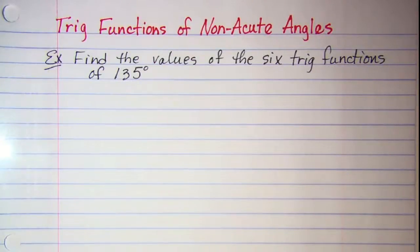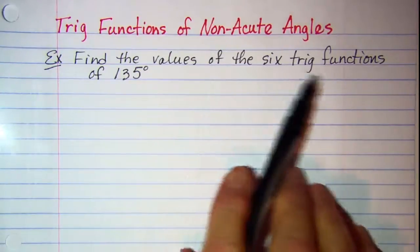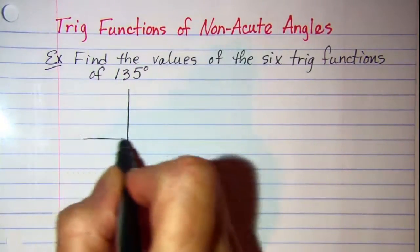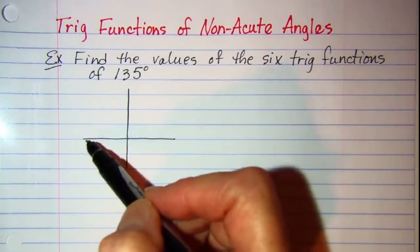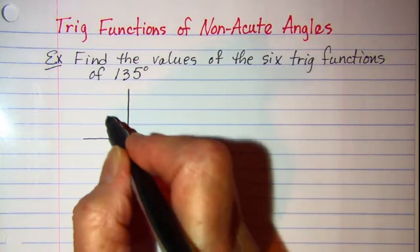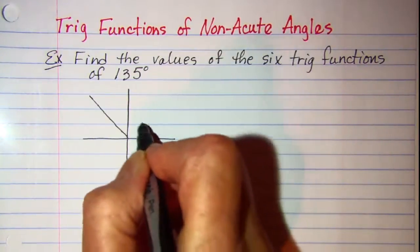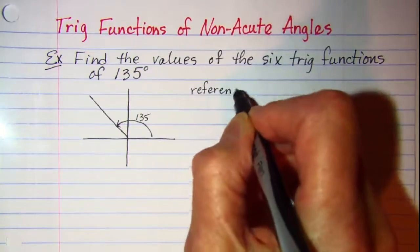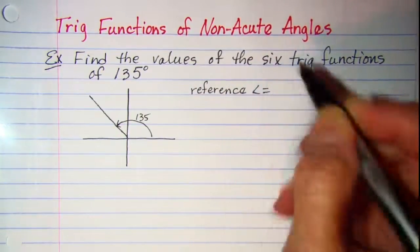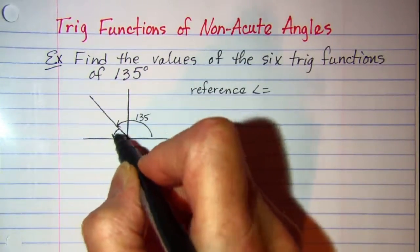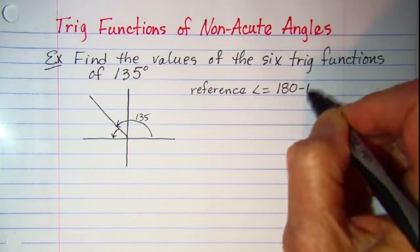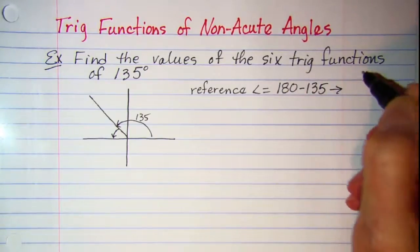In this video we'll be talking about trig functions of non-acute angles. Our first example is to find the values of the six trig functions of 135 degrees. If we graph 135 degrees, we see that it's more than 90 degrees but less than 180, so the terminal side will lie in quadrant two. The reference angle can be found by taking 180 minus 135, so our reference angle is 45 degrees.